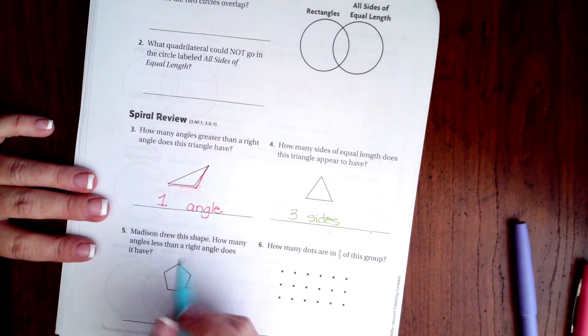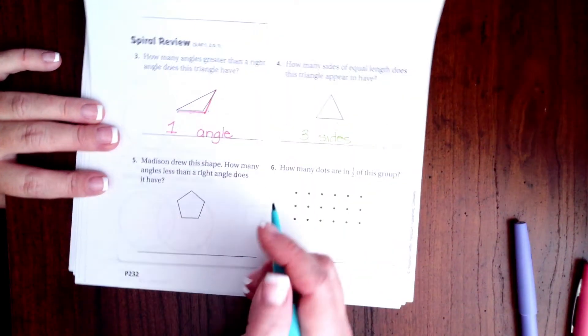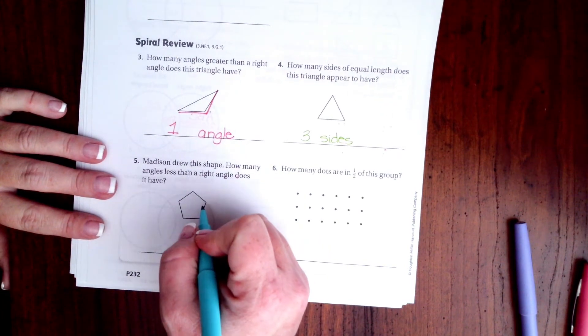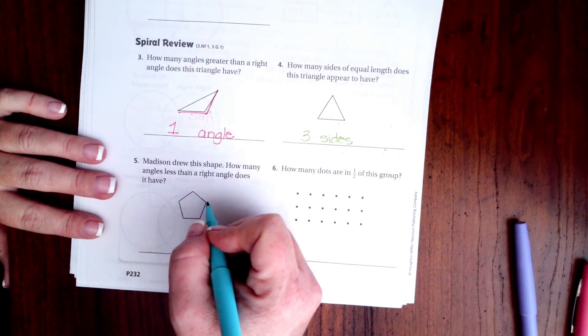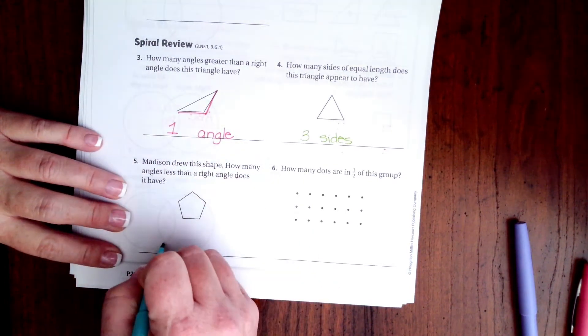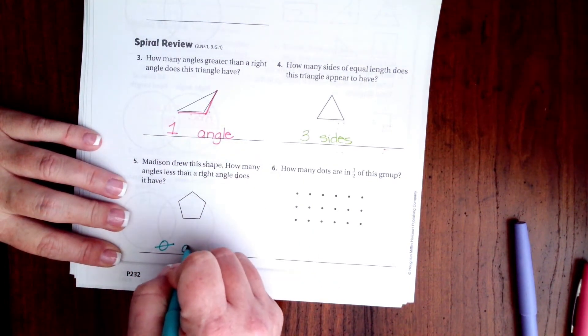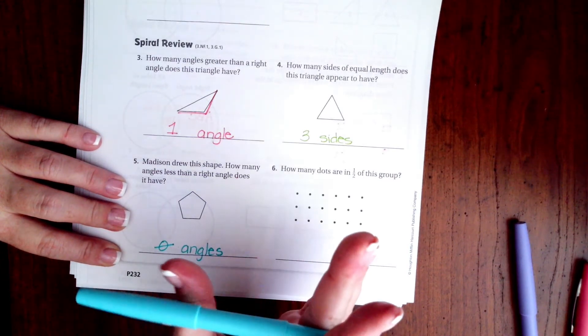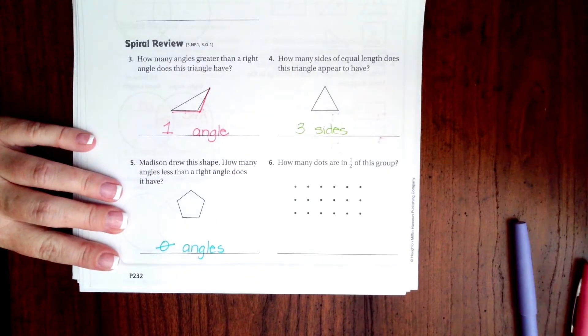Madison drew this shape. How many angles less than a right angle does it have? Well, all of these are bigger than a right angle. That would be zero angles. They're all open just a tiny bit more than a right angle.